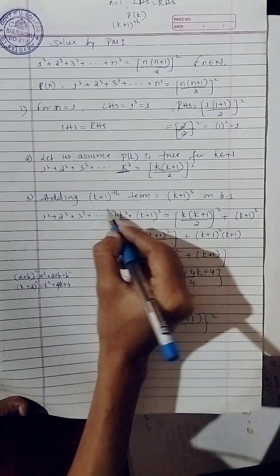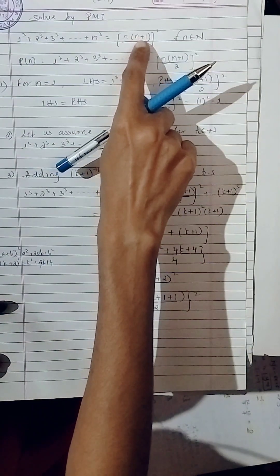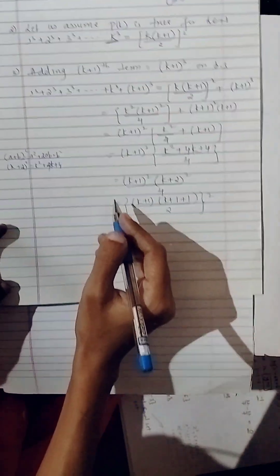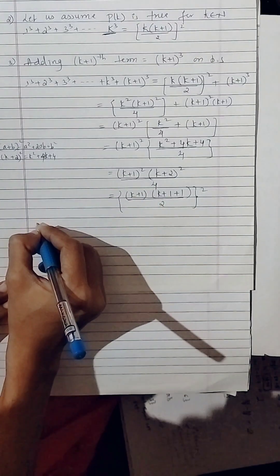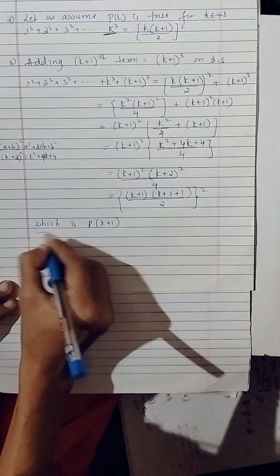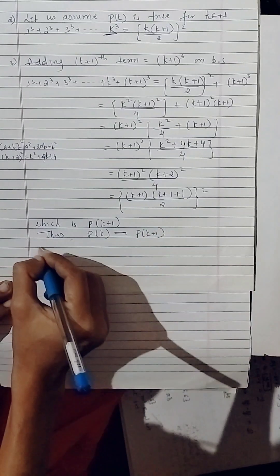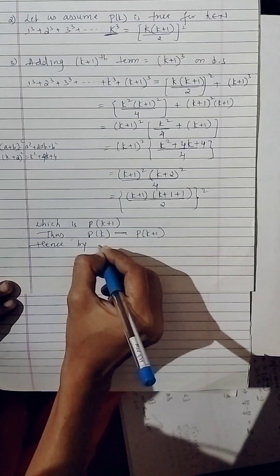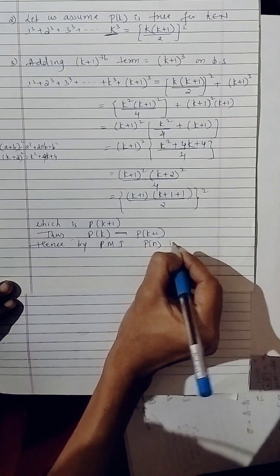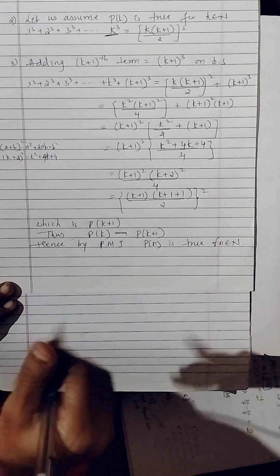Since four is the square of two, this can be written as k plus one into k plus two divided by two, whole square. As we are solving for k plus one, wherever n appears we get k plus one, and n plus one becomes k plus one plus one. This matches our required RHS form. Conclusion: P of k plus one is true, thus P of k implies P of k plus one, and hence by the principle of mathematical induction, P of n is true for all natural numbers n. Always mention the conclusion.